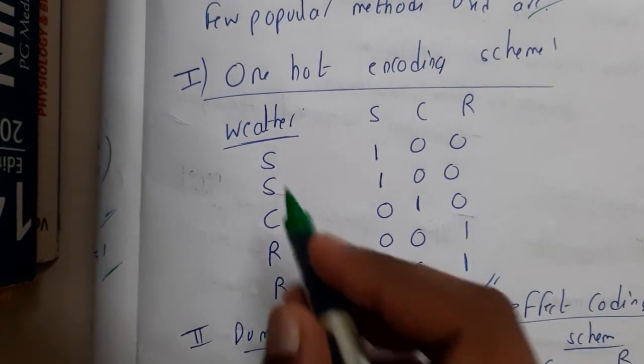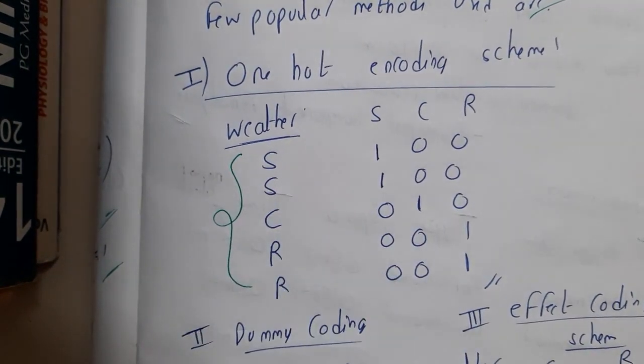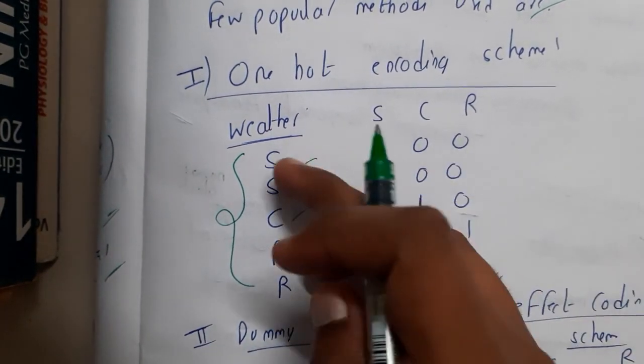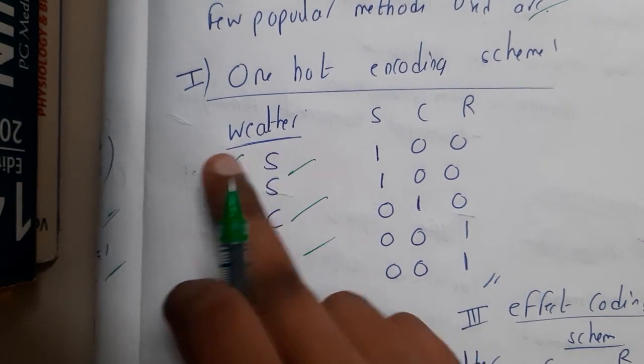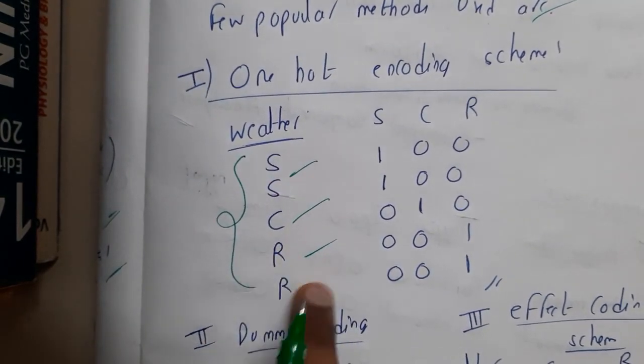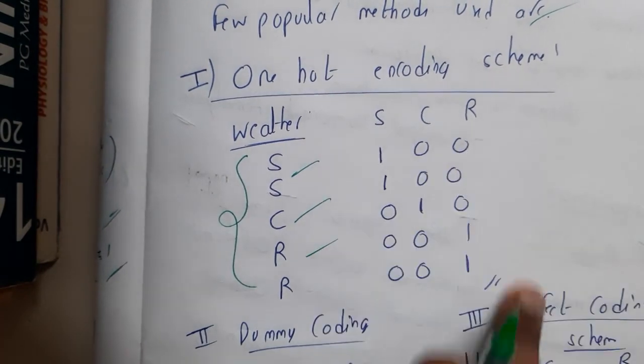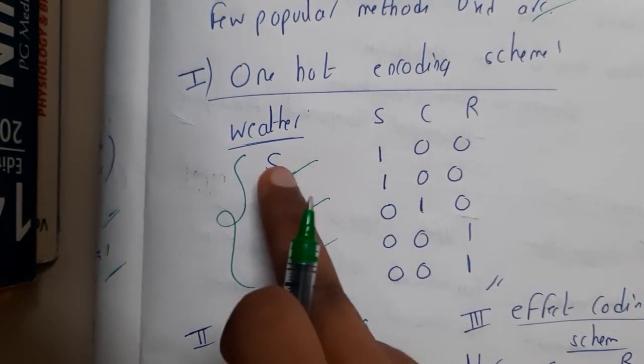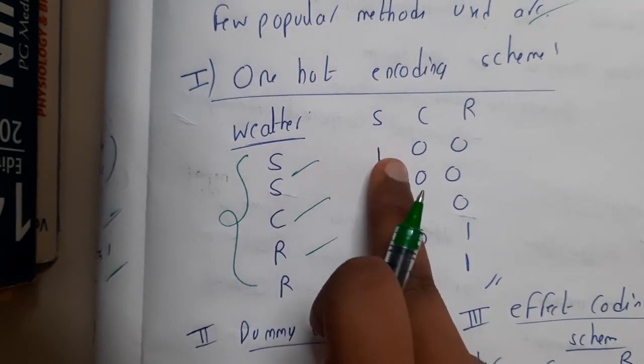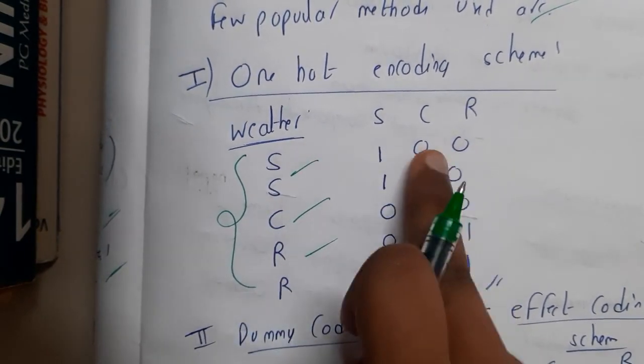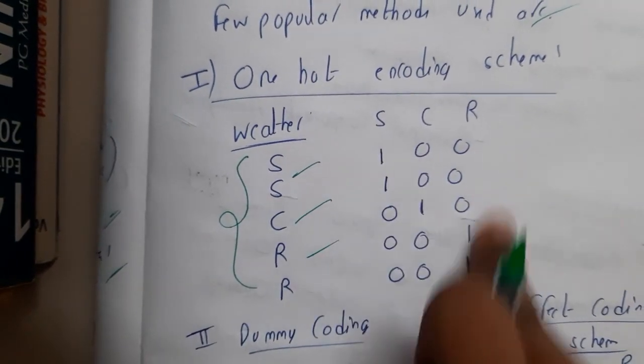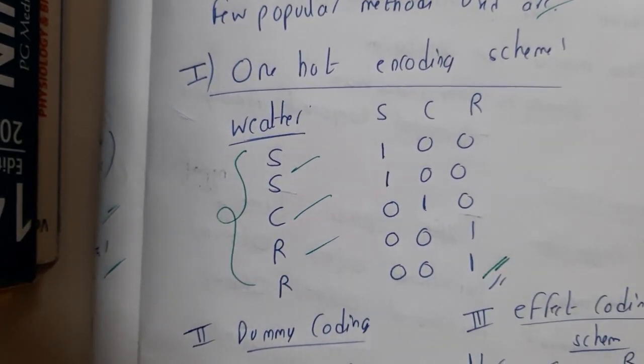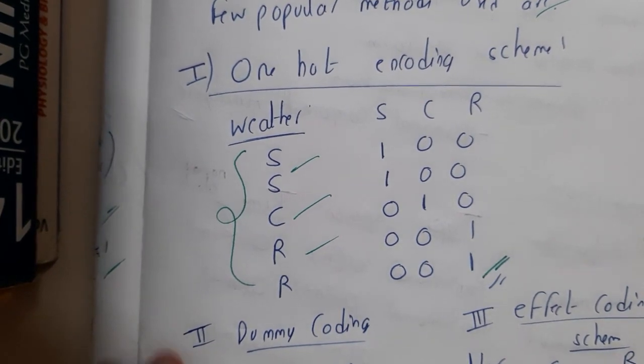Basically, this is the simplest method. Whatever is your weather—like here I told sunny, cold, and rainy—based on your weather, you're going to represent in terms of matrix. S, C, R—based on its presence. Here S is there, so it is one. C and R are not there, so it is zero. Based on the presence, wherever it is there you will place ones and rest zeros. This is the simple one hot encoding scheme.